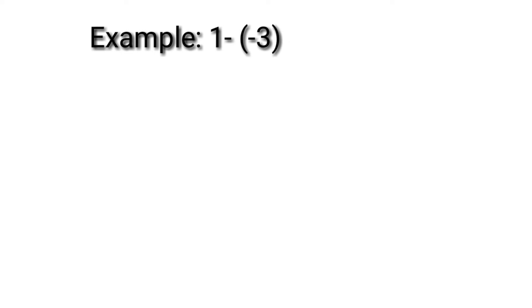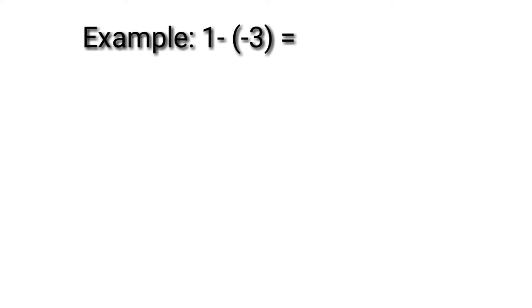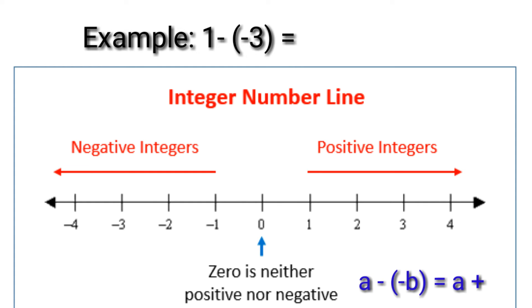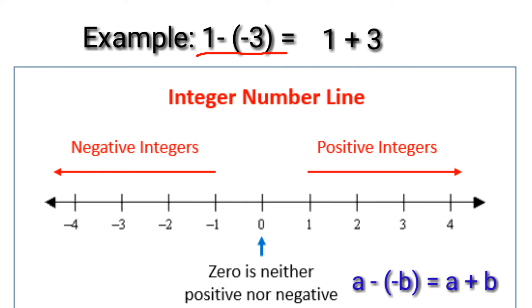Example: 1 minus negative 3 equals? Let us use the integer number line to subtract. It is a rule in subtracting integers that a minus negative b equals a plus b. Therefore, 1 minus negative 3 equals 1 plus 3.